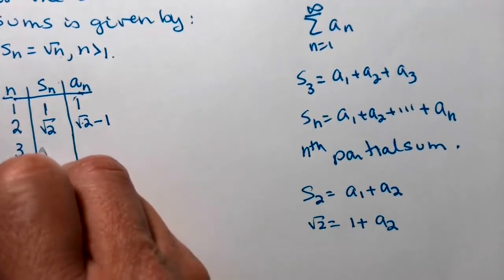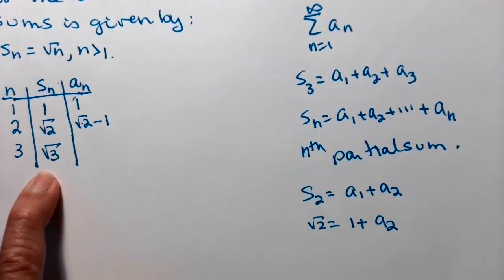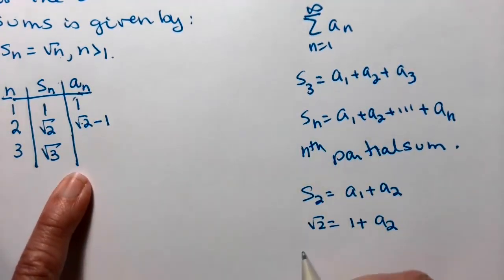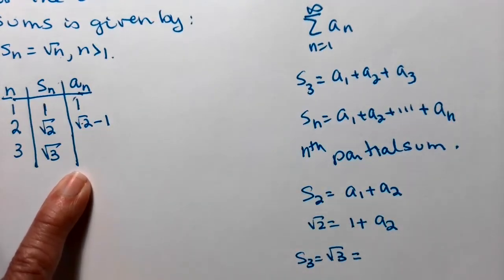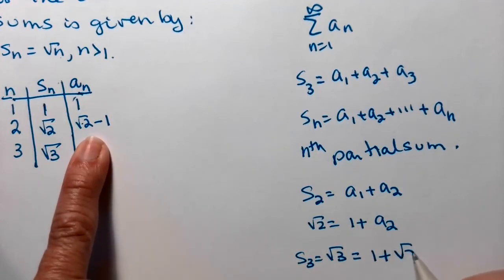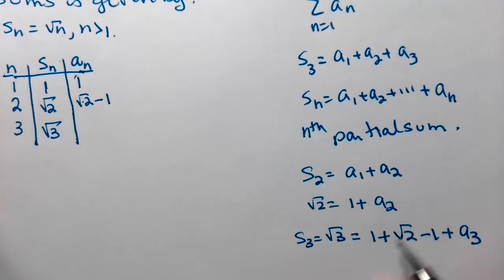Let's do it again. If n is 3, I get a square root of 3. So that means I need whatever I have adding in here, so s sub 3, that square root of 3 is equal to a sub 1 plus a sub 2 plus a sub 3.